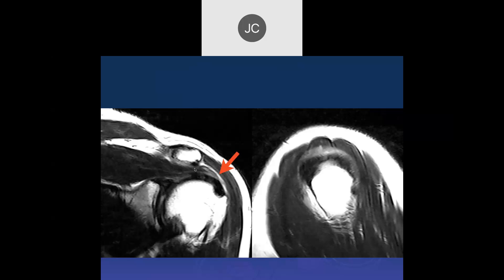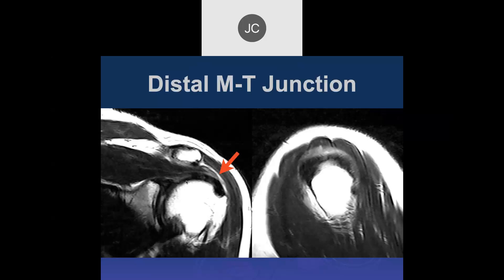This type of pathology — distal musculotendinous junction extension — can be seen elsewhere in the body, such as in the wrist, where muscles extending into one of the six extensor compartments can cause chronic wrist pain by the same mechanism.